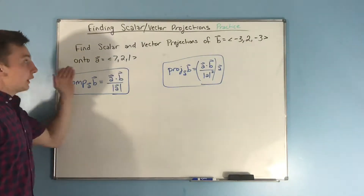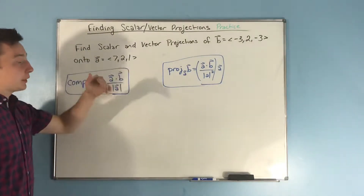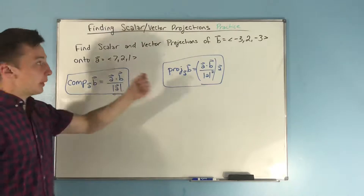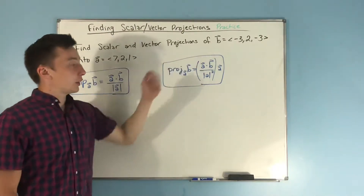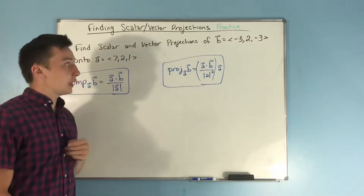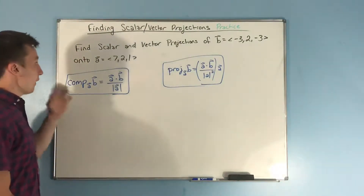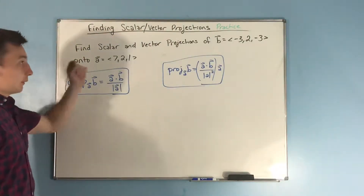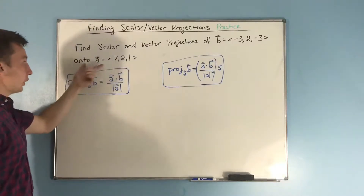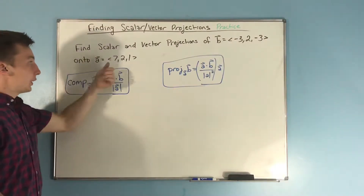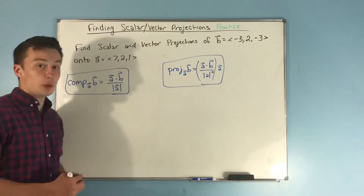We're finding the scalar and vector projections of B, which is negative three, two, negative three, onto vector A, which is seven, two, one.